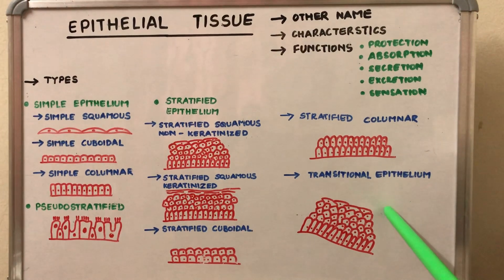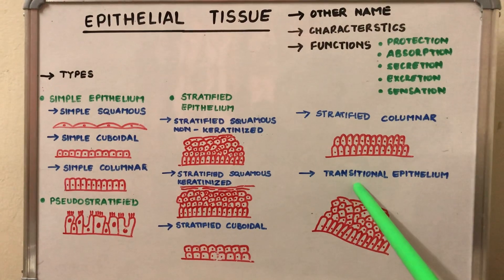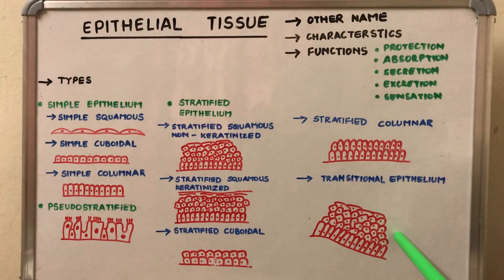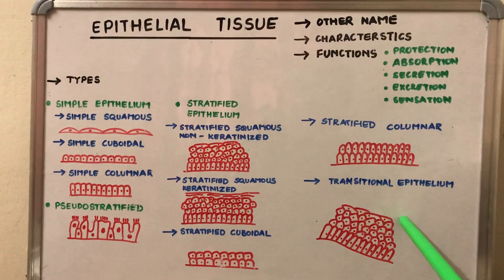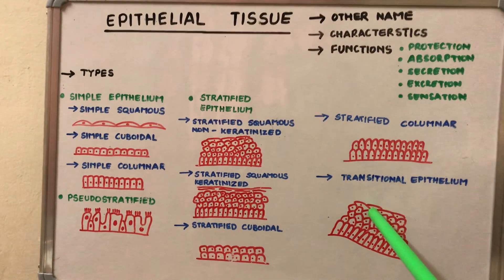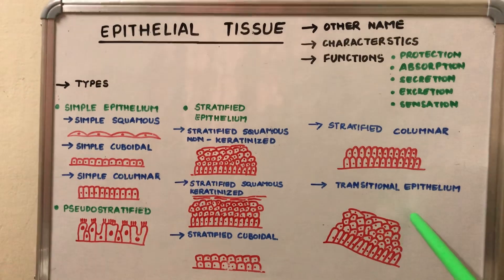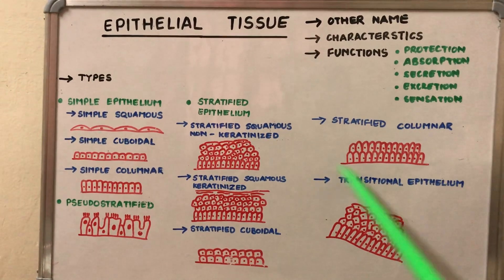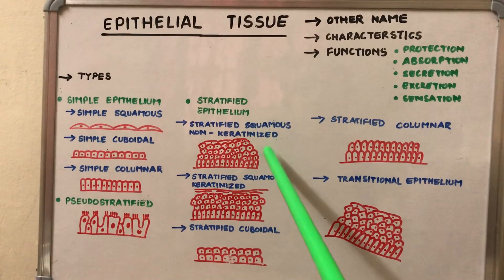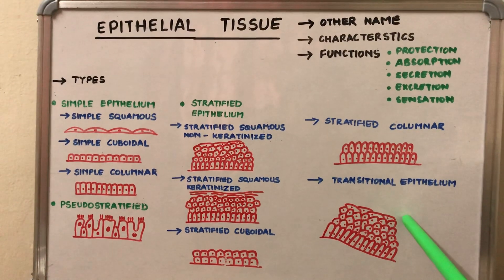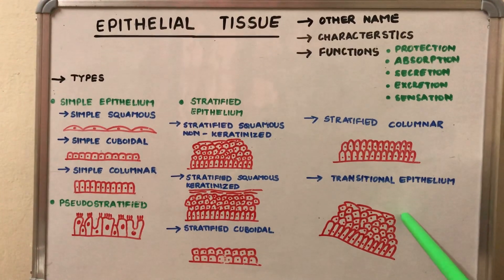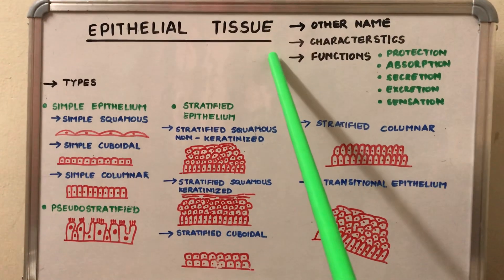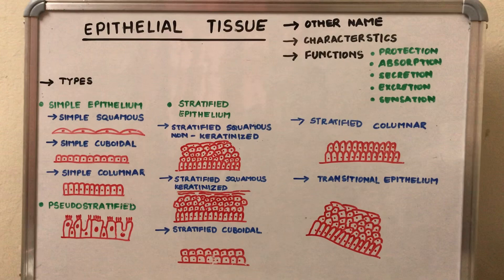Because the cells undergo modifications, it is known as transitional epithelial tissue. The basal layer is columnar cells, the middle layer is polygonal cells, and the superficial layer is umbrella-shaped — not the typical flat squamous cells. So students, today's topic was epithelial tissue or the epithelium. Thank you.